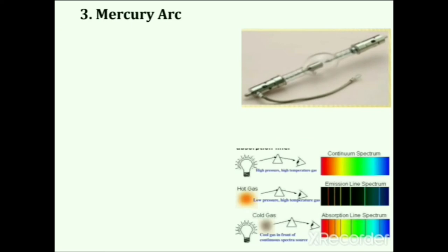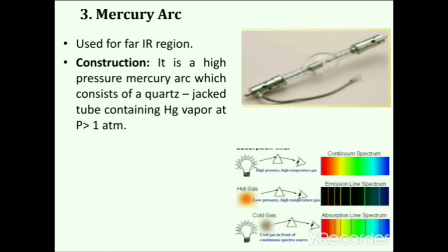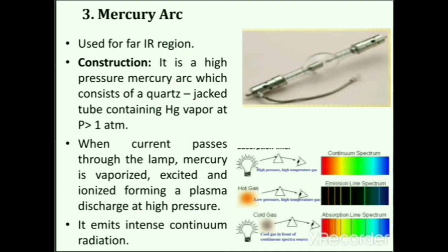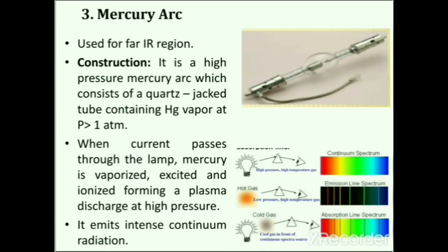Next is the mercury arc, which provides radiation in the far infrared region. It is a high-pressure mercury arc consisting of a quartz jacket tube containing mercury vapor at more than one atmospheric pressure. When current passes through the lamp, mercury is vaporized, excited and ionized, forming a plasma discharge at high pressure, emitting intense continuum radiation in the far infrared. There are generally three types of radiation spectra: continuum spectrum, emission line spectrum and absorption line spectrum. A spectral continuum occurs when the interaction of a large number of atoms, ions or molecules spreads out all the discrete emission lines so they can no longer be distinguished.